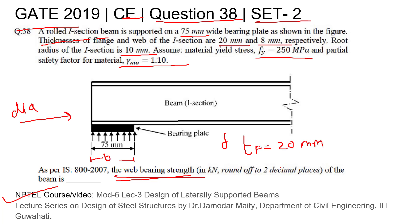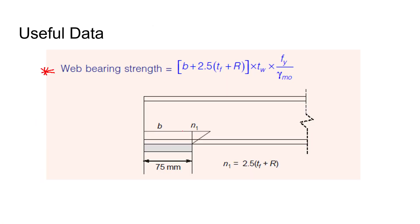After that, R, the root radius, is 10 mm. The thickness of the web, tw, is given as 8 mm. Yield strength fy is 250 MPa, and the partial safety factor γM0 is 1.1. All the terms are given, so we simply put them into the formula.